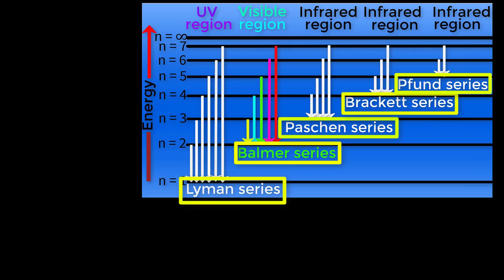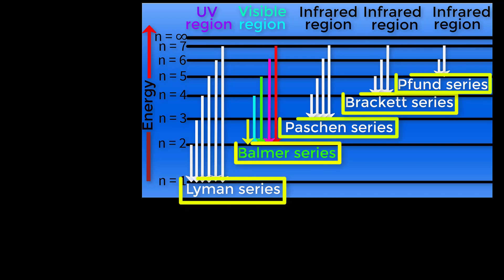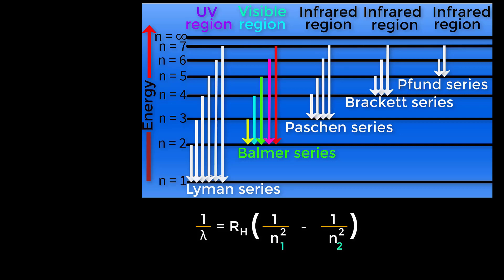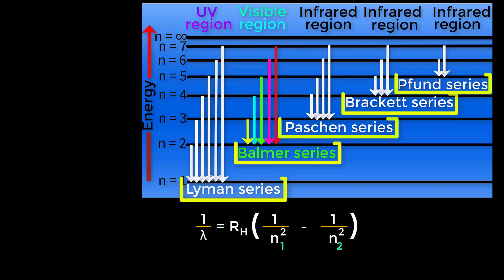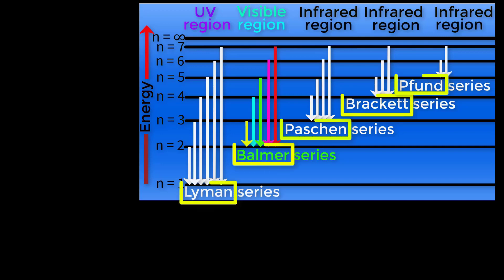Now look at the names of the spectral series of hydrogen atom. We have to memorize the names of the series in order. We need a crystal clear idea about the different lines of different series, and we must be very careful about taking the values of n1 and n2, because for different series we will get different values of n1 and n2. Let us learn the tricks about how to memorize the names of the series in order.